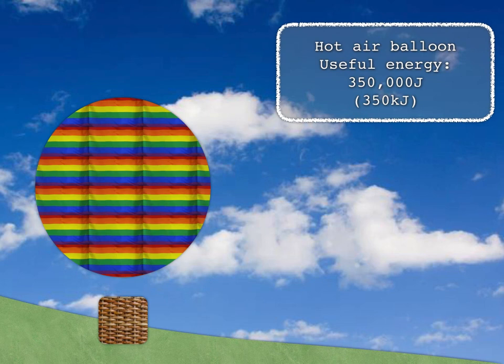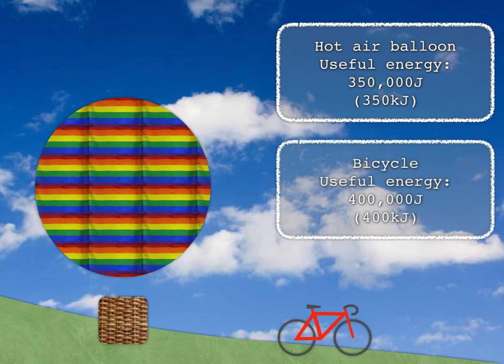Speaking of bikes, if you choose yours this morning, you'll have to travel a bit further. You, of course, can't just fly over everything. So maybe 400,000 joules would have to be transferred to your kinetic store in total. 400 kilojoules of useful energy output.